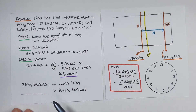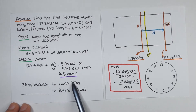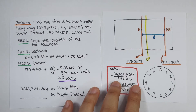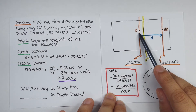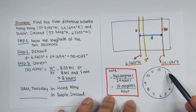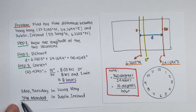So we can say that Hong Kong is 8 hours ahead of Dublin, Ireland. If it is 3 a.m. Tuesday in Hong Kong, what time is it in Dublin, Ireland? You have to move 8 hours counterclockwise since Dublin time is behind Hong Kong time — counting back 8 hours gives 7 p.m. Monday in Dublin.